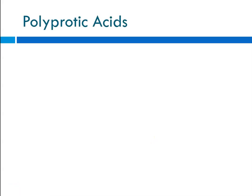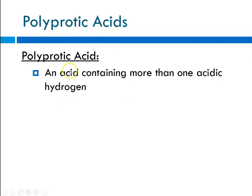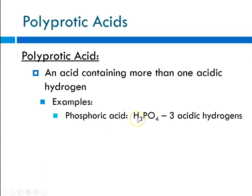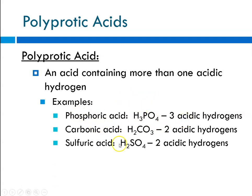We should take a brief detour to discuss polyprotic acids. Since an acid is a proton donor, a polyprotic acid is one that can donate more than one proton — a proton being a hydrogen ion. So a polyprotic acid contains more than one acidic hydrogen. Examples include phosphoric acid with three acidic hydrogens, and carbonic acid and sulfuric acid each with two.